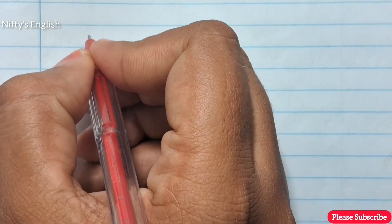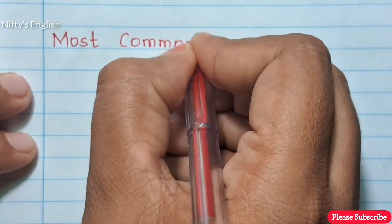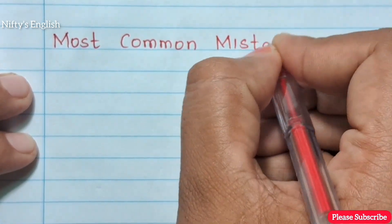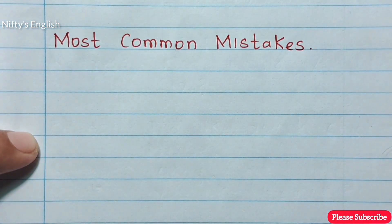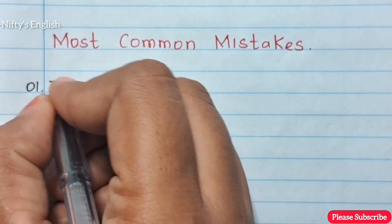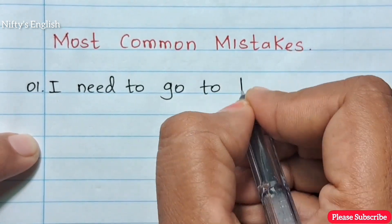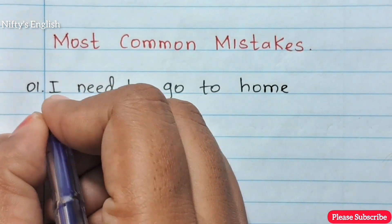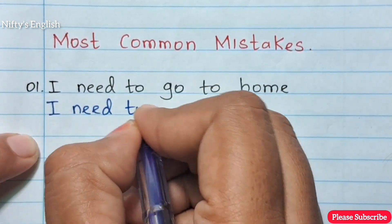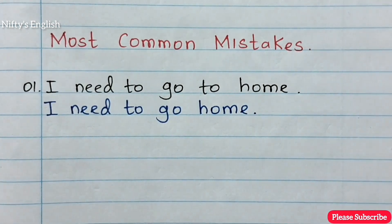Hi Nifties, welcome to Nifties English. Today I will explain the most common mistakes. Number one: 'I need to go to home' is the wrong sentence. 'I need to go home' is the right sentence.